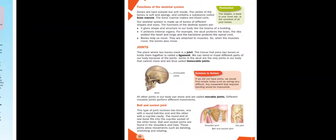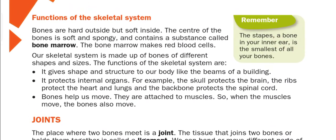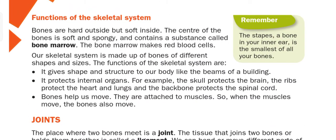Bones are hard on the outside but soft on the inside. The center of the bone is soft and spongy and contains a substance called bone marrow. The bone marrow makes red blood cells, or RBCs. Our skeletal system is made up of bones of different shapes and sizes.